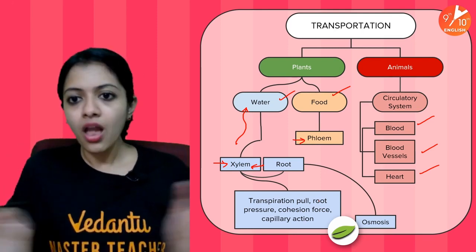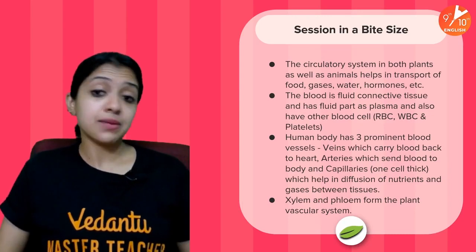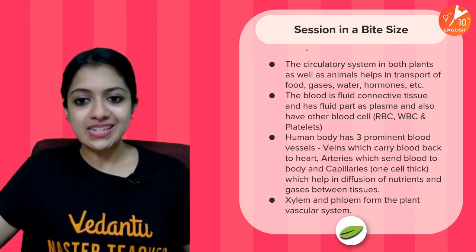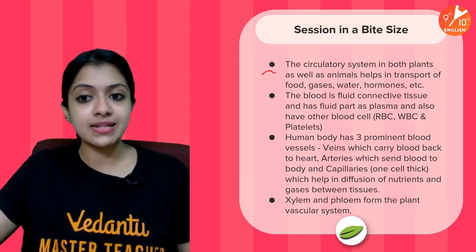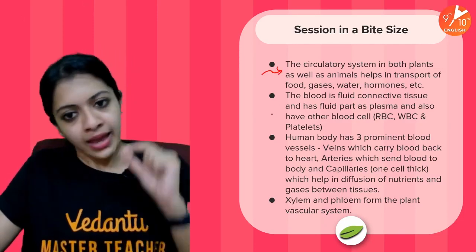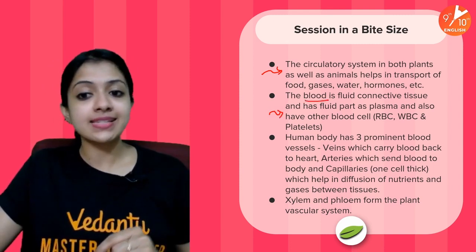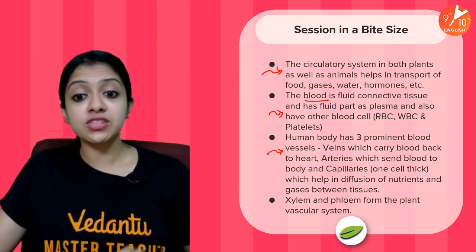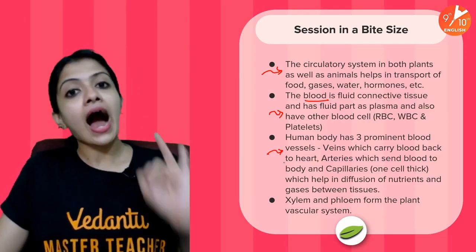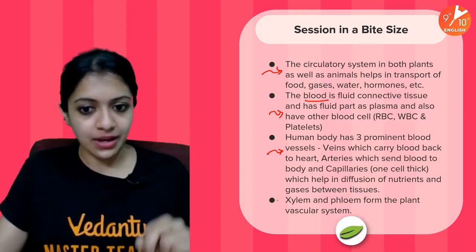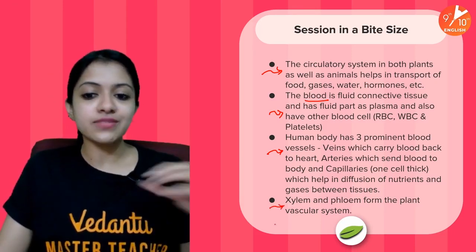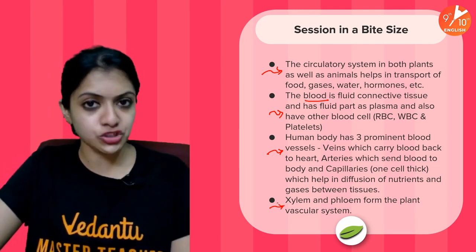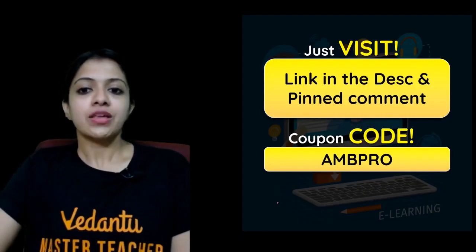Here is the entire session in a bite-size: the circulatory system in both plants and animals helps in transport of various substances. Blood is a fluid connective tissue with plasma and blood cells. The human body has three major kinds of blood vessels — veins, arteries, and capillaries. As far as plants are concerned, xylem and phloem form the major plant vascular system — the conducting tissues.